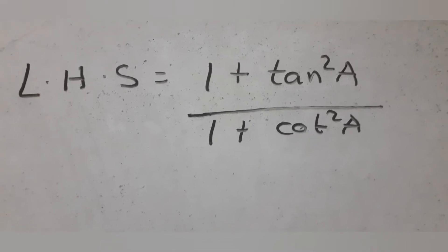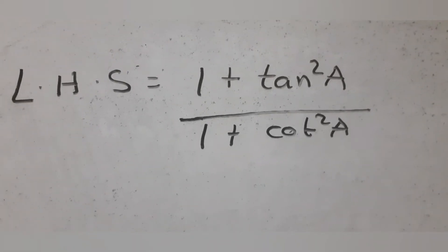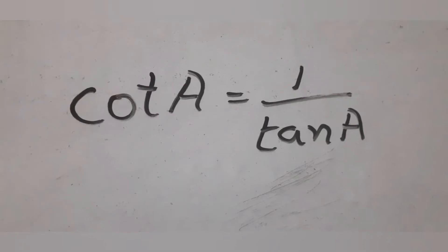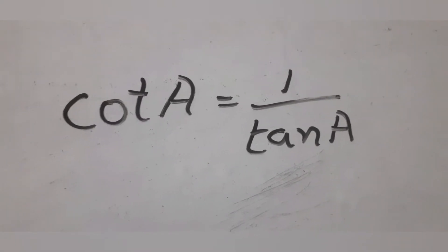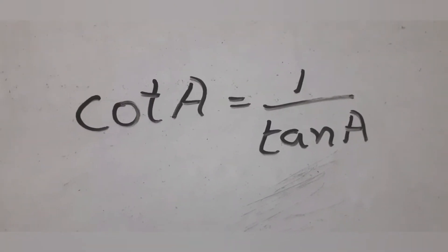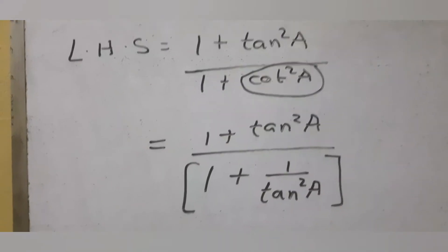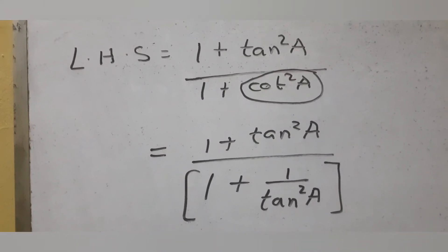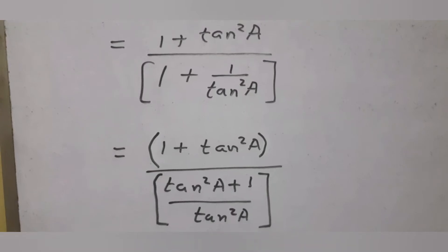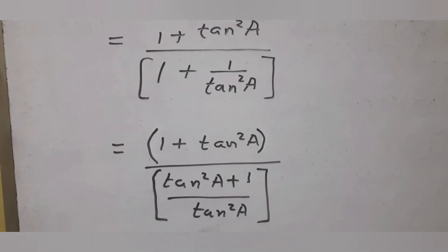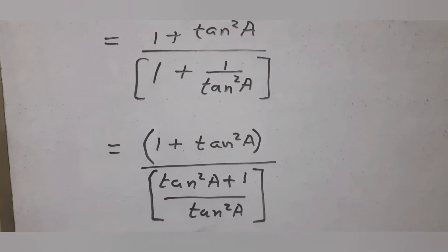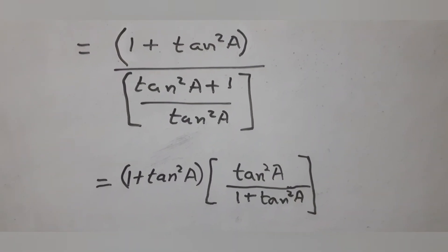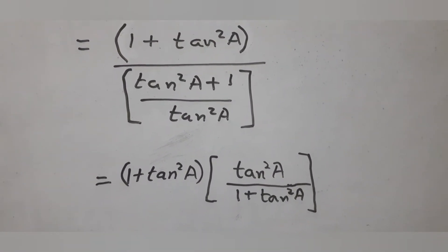Start from the left-hand side: change cot a to 1 by tan a in the denominator. Now simplify the fraction in the denominator. Cancel the common factors so that you get the left-hand side equal to tan square a.